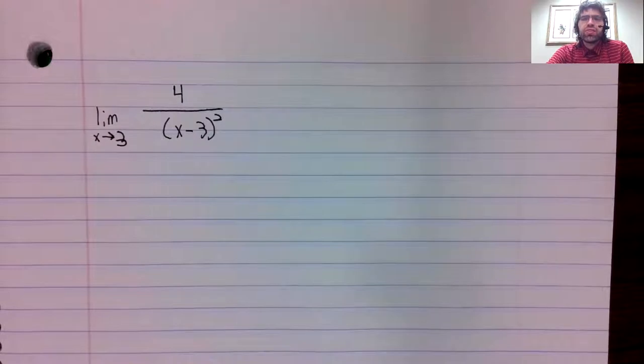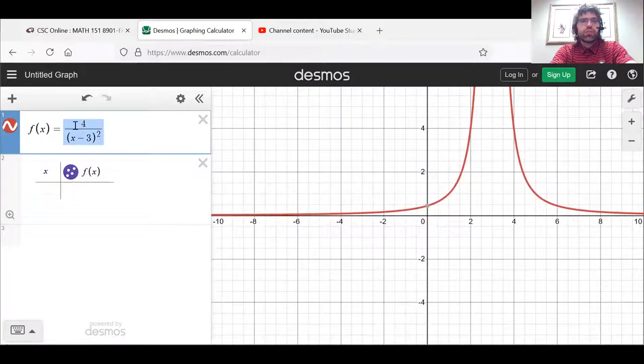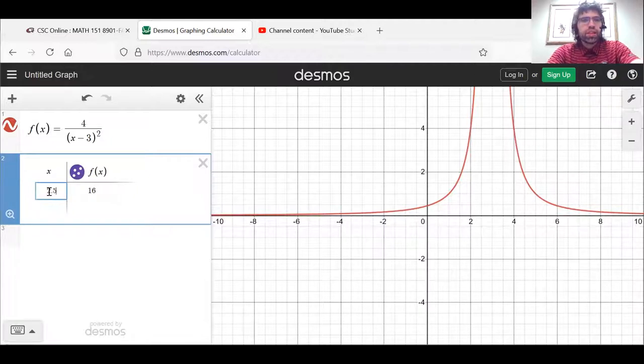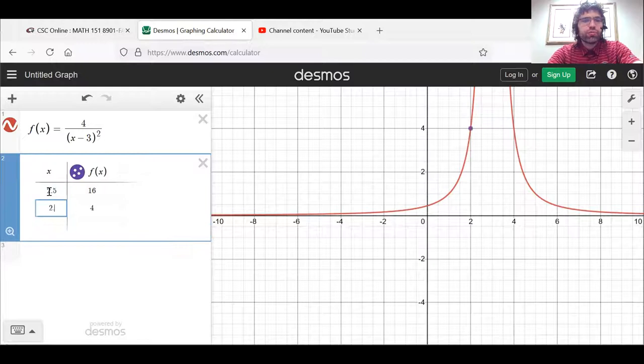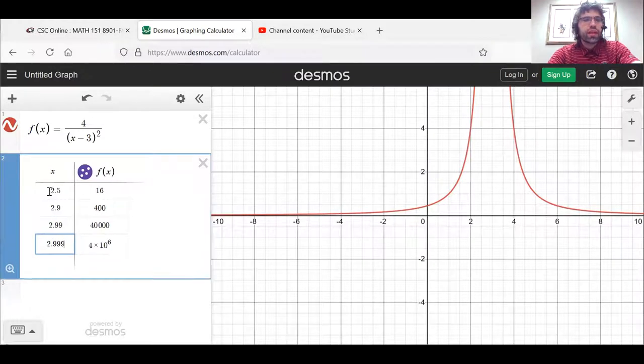Let's investigate it on Desmos. Here's our function, and we'll create a table of values. And we'll let x approach 3, and we'll see what happens.